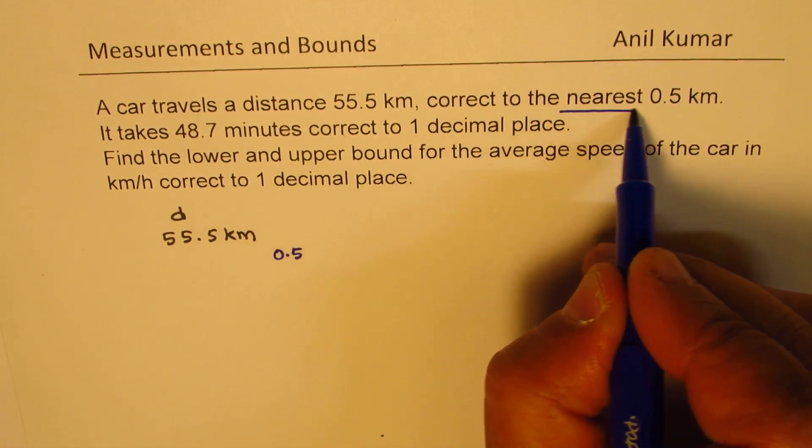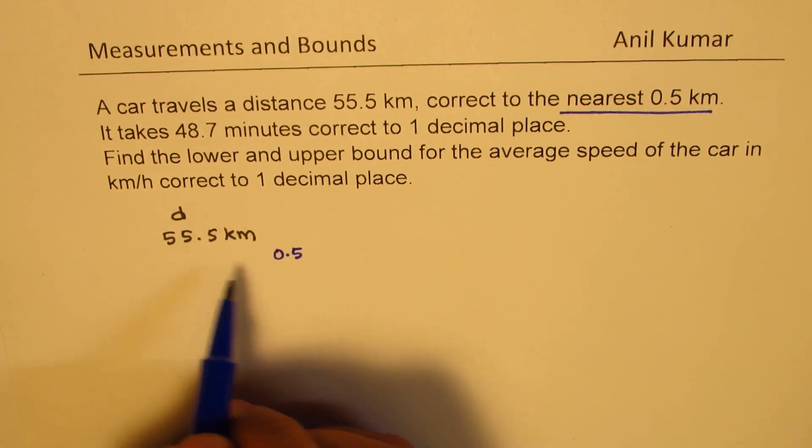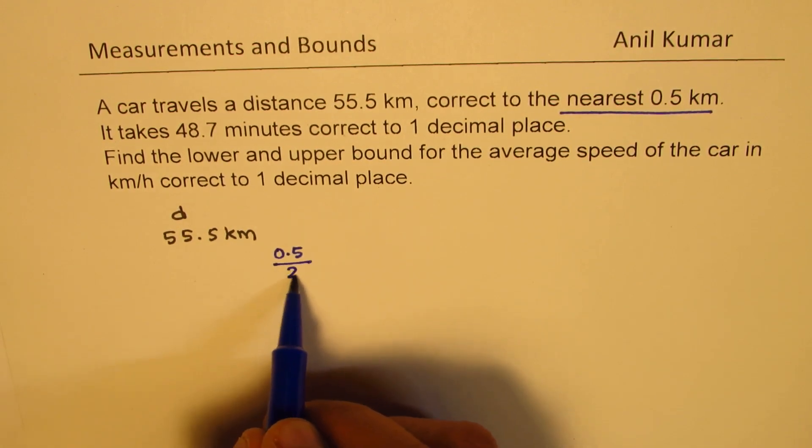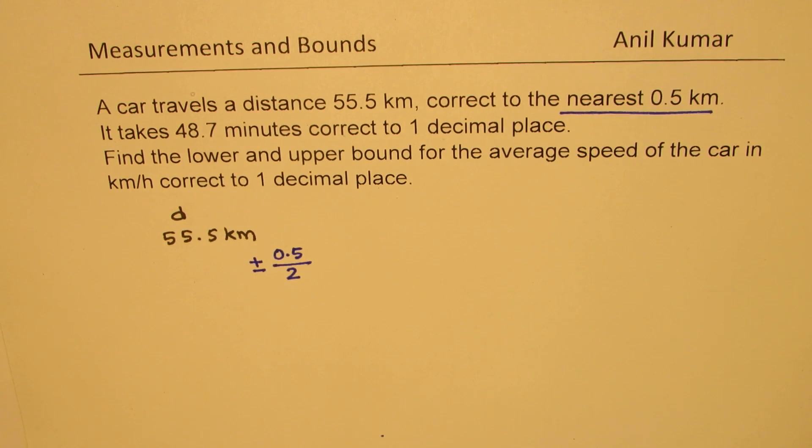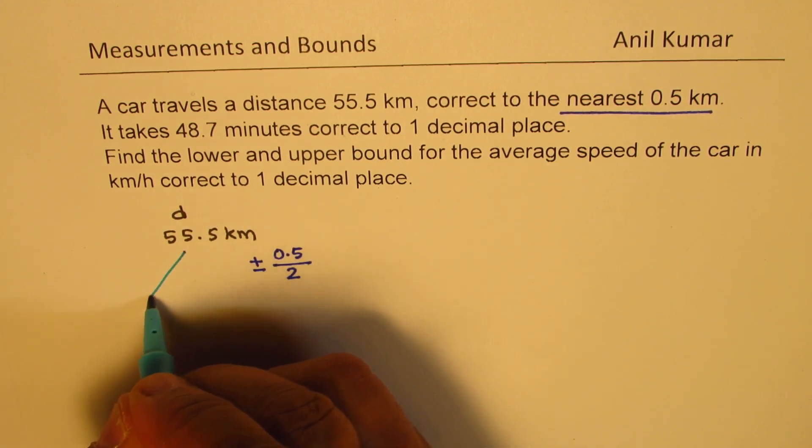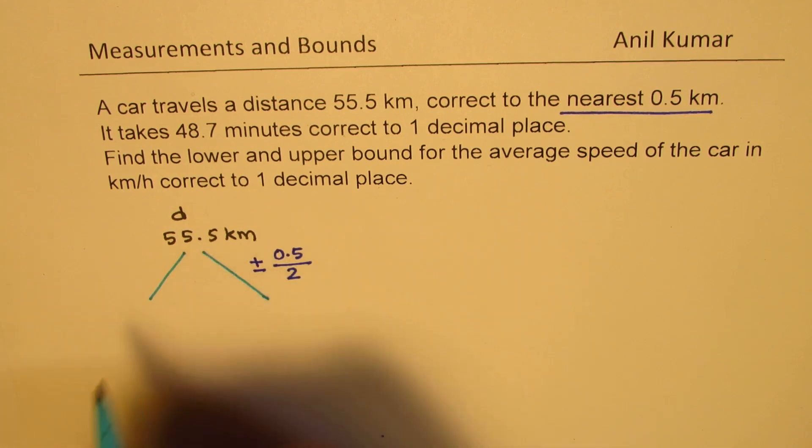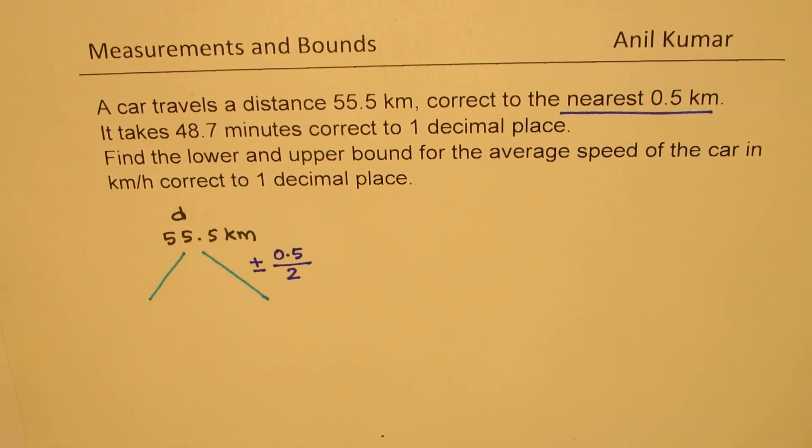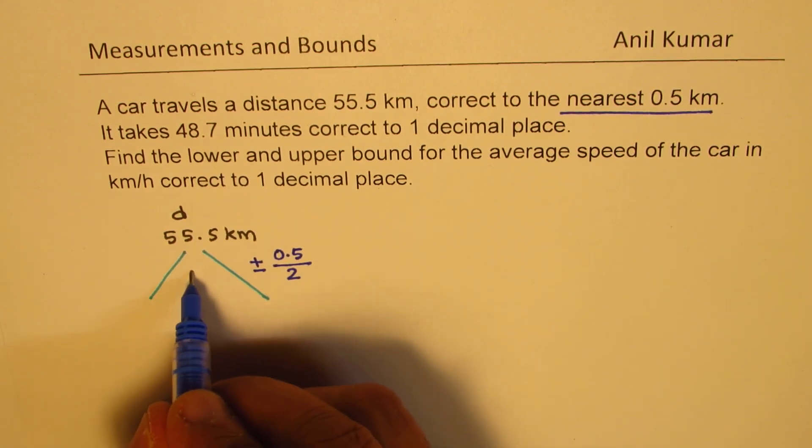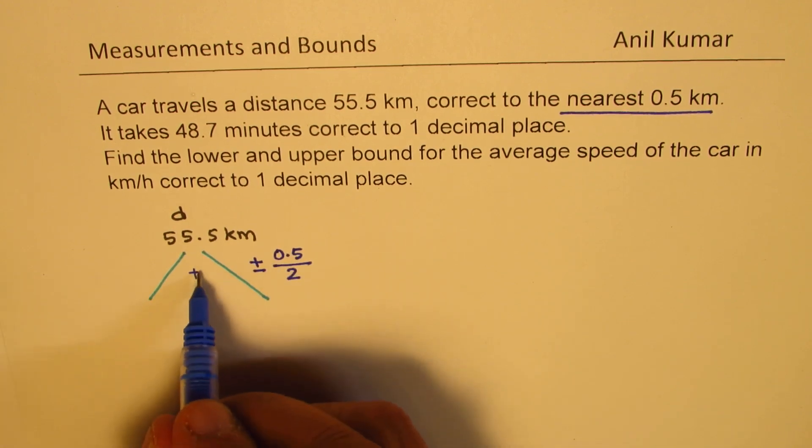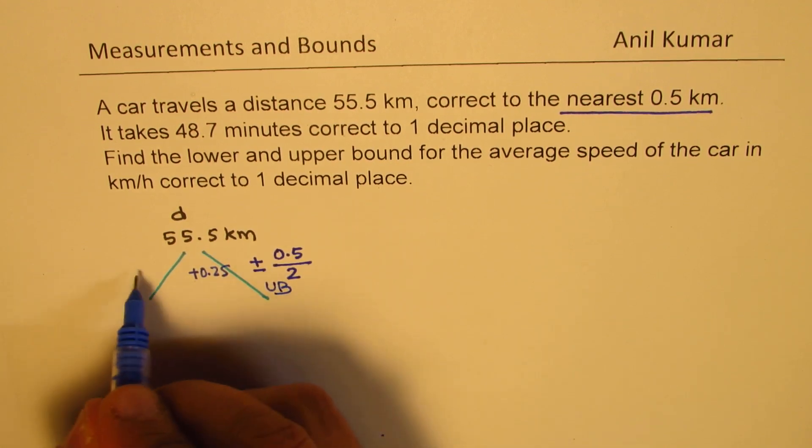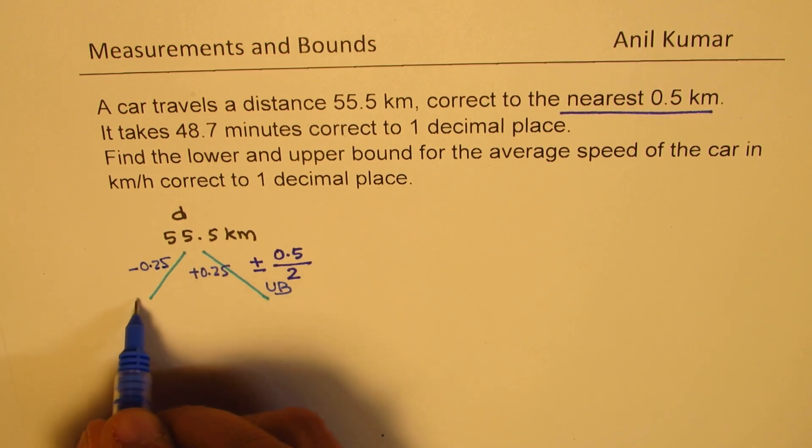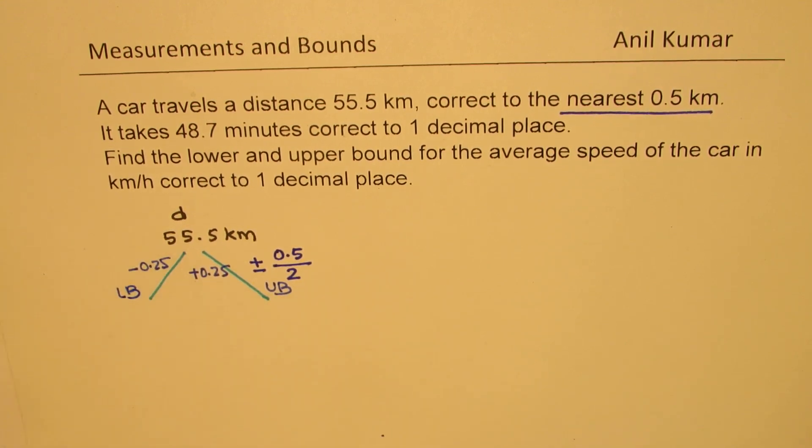Now, it is correct to 0.5 km. That means it could be plus 50% of this, or minus 50% of this. So that gives you two possible values for this distance. We get those two possible values as the lower bound and the upper bound. If you add, then you get the upper bound. If I add half of this, which is 0.25, I get the upper bound. And if I subtract 0.25, I get the lower bound for the distance traveled.